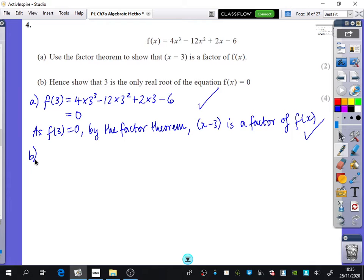Well, I think if we know that f of x is equal to 4x cubed minus 12x squared plus 2x minus 6, if x minus 3 is a factor, how do you think we could write it? How could I rewrite this if I know that x minus 3 is a factor?